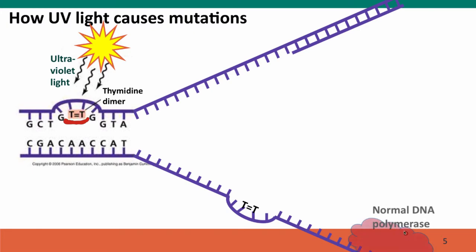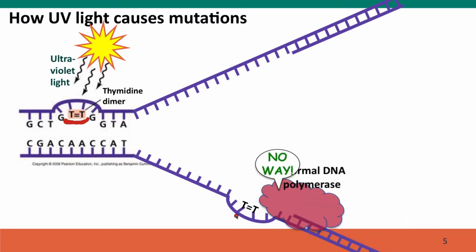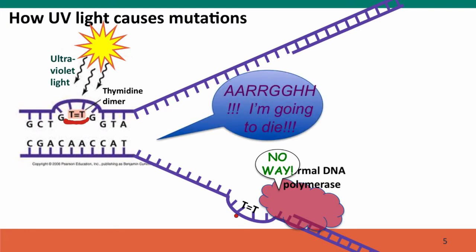So when DNA polymerase encounters this sort of DNA damage, it cannot replicate it. It just stops and says, no, this is not something I can handle. I can't make base pairs when the bases are covalently bound to each other. And this is very serious for the cell because if the cell can't replicate its DNA, it's going to die.